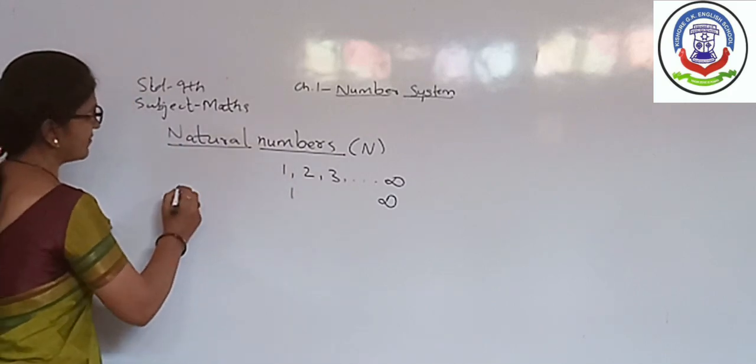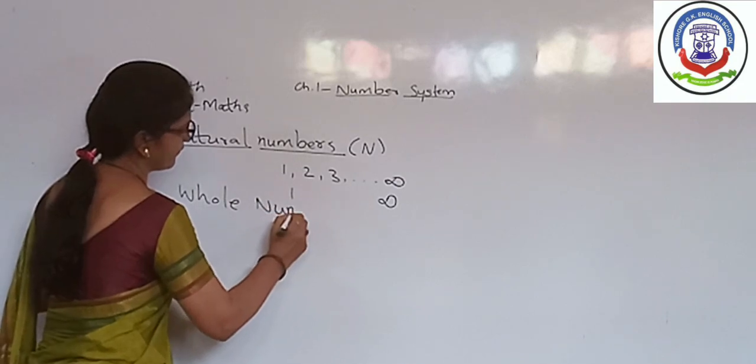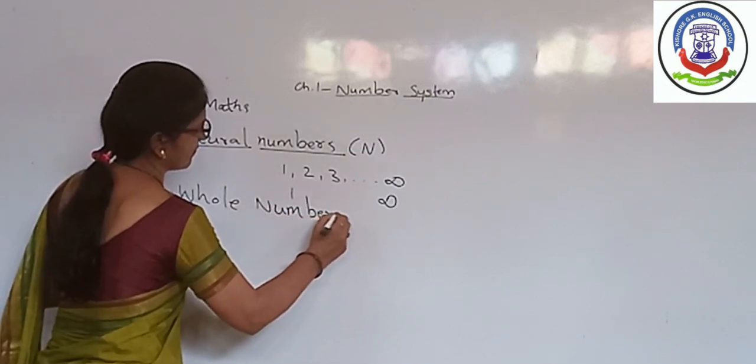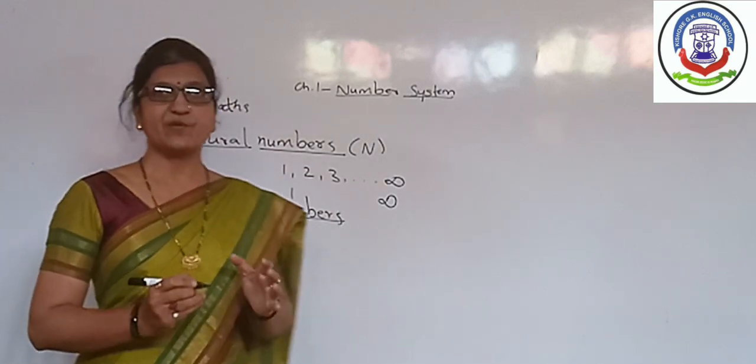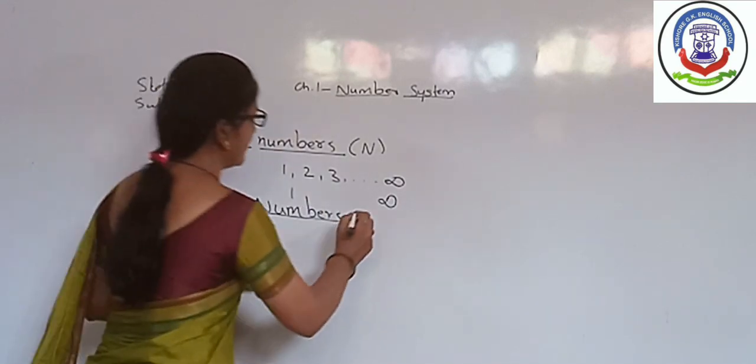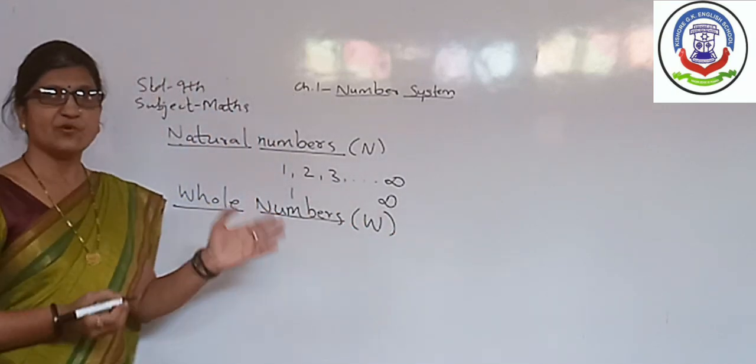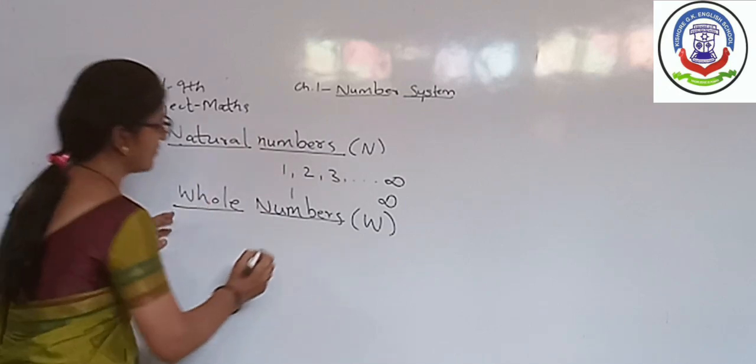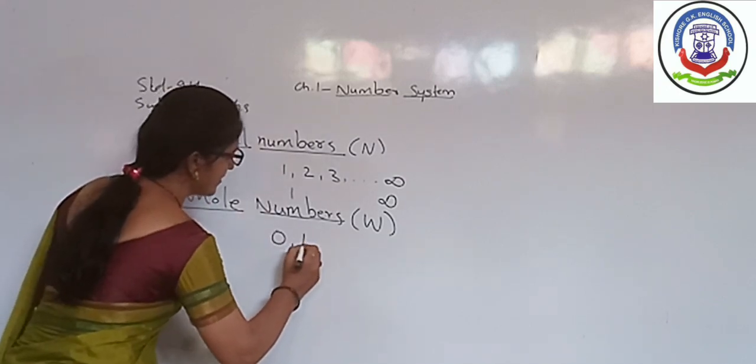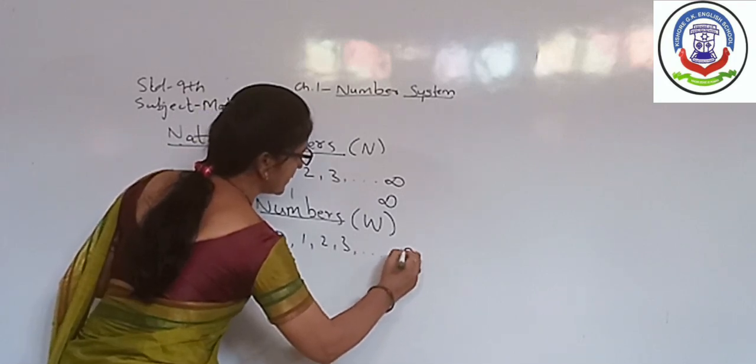Next set of numbers is Whole Number. The symbol which is used to represent whole number is W. W stands for Whole. Whole number includes natural numbers as well as zero. First member of this series is 0 and then natural numbers. Last member of this series is infinity.